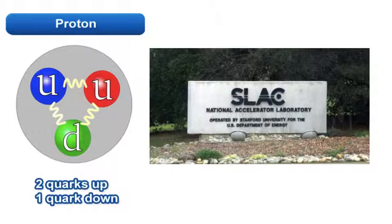Basically, a proton is made up of at least three quarks, two up quarks and one down quark.